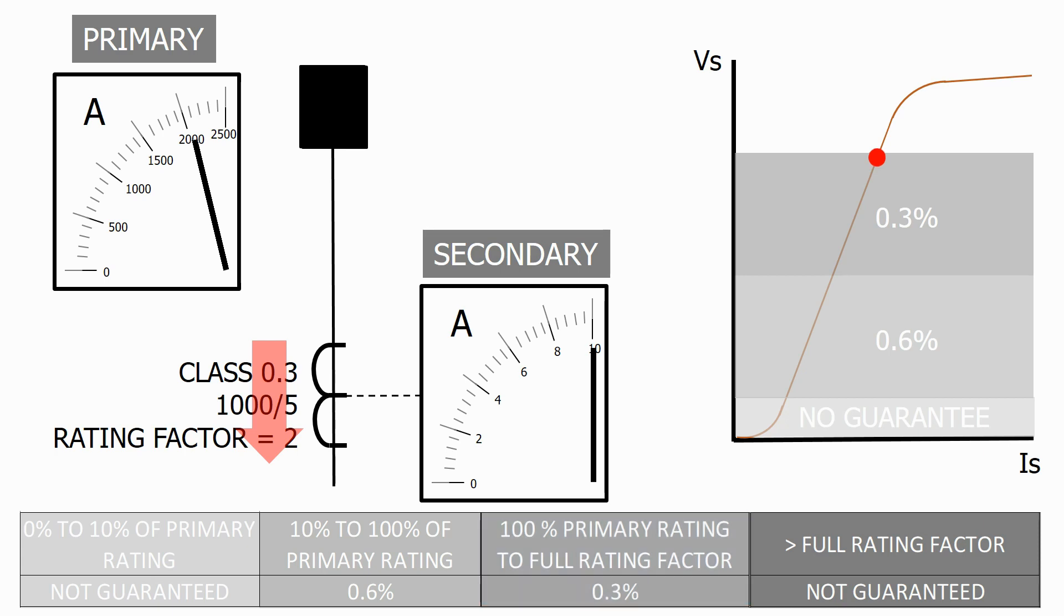Let's now increase the current above the full rating factor of 2000 amps. As we can see from the CT magnetisation curve we are now getting into the non-linear saturation zone. Because this part of the curve is non-linear we can no longer guarantee the accuracy of the CT secondary current.